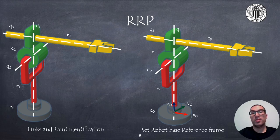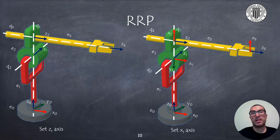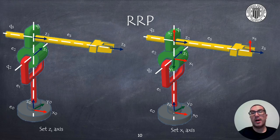The RRP robot shown has two revolute joints and a final prismatic joint. Again, we must identify the links and joints of the robot and set the position of the reference frame of the base. The Z axis must contain the direction of the subsequent joints. Therefore Z1 will be placed on joint 2, Z2 will be placed on joint 3, and Z3 has the same direction as Z2. The X axis must be perpendicular to the Z axis and to the previous Z axis. Therefore X1 will point as shown in the figure, as it is perpendicular to Z0 and Z1.